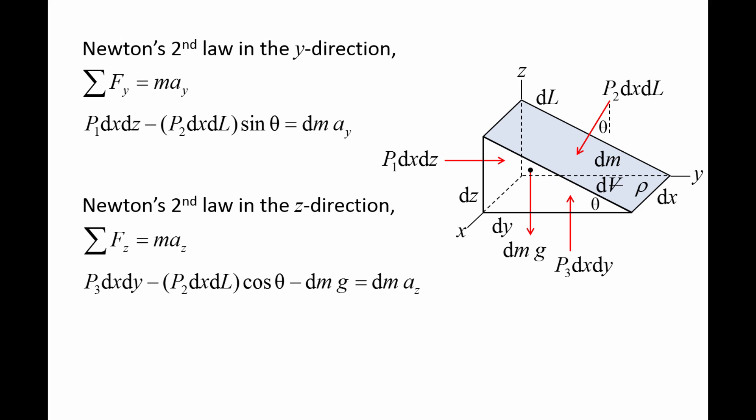We can rewrite dl and dm in terms of other quantities. dl times sin theta is equal to dz, dl times cos theta is equal to dy, and dm is equal to the density rho times the volume dv.